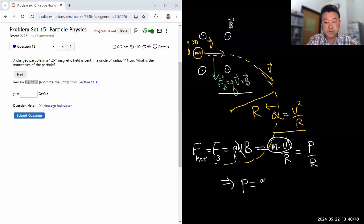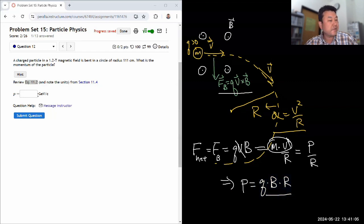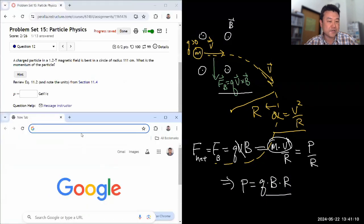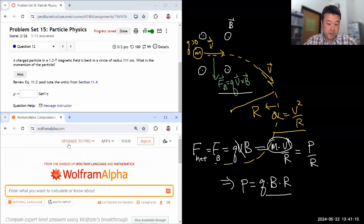Say that it's equal to charge times magnetic field times the radius R. Okay, let me plug this into Wolfram Alpha. I want to use Wolfram Alpha to do the unit conversion from what's going to be basic SI units into the electron volt units. Wolfram Alpha can do that in a single instruction without me doing complicated calculations.